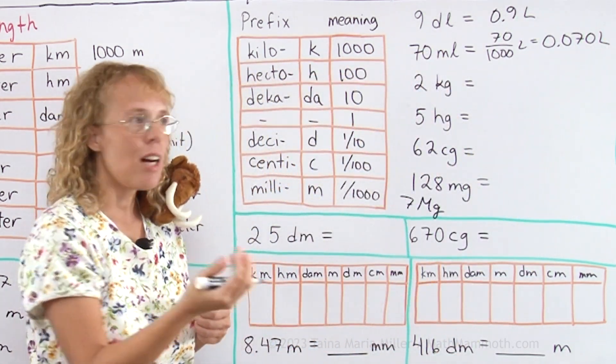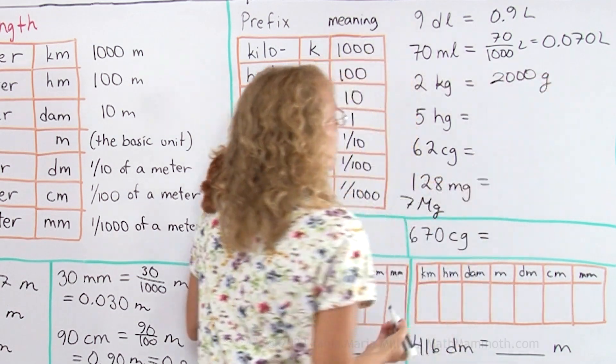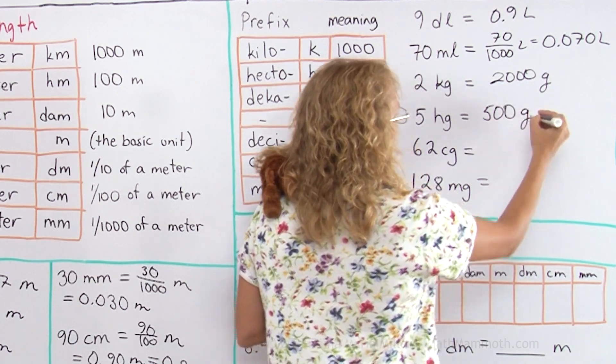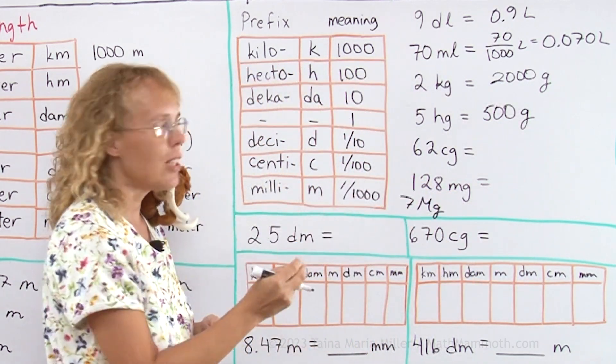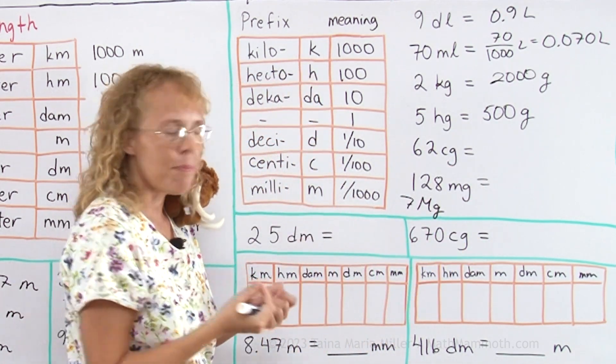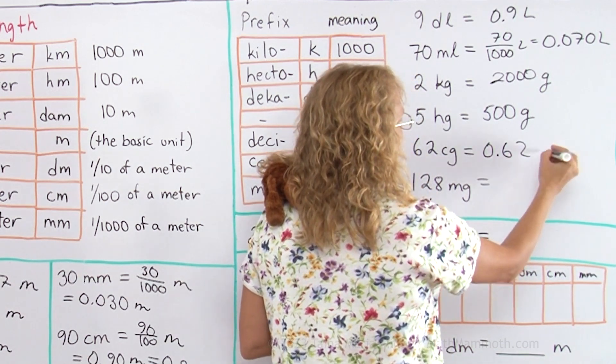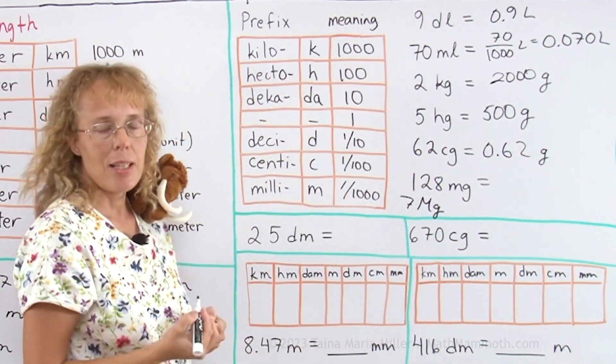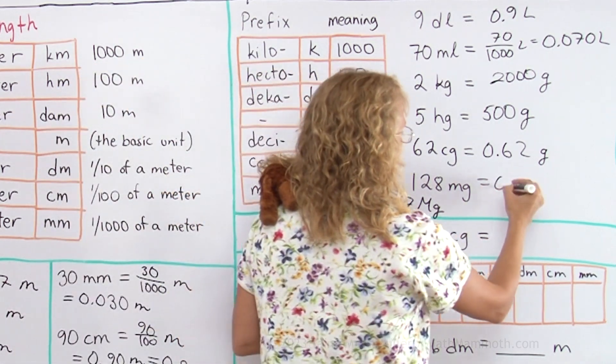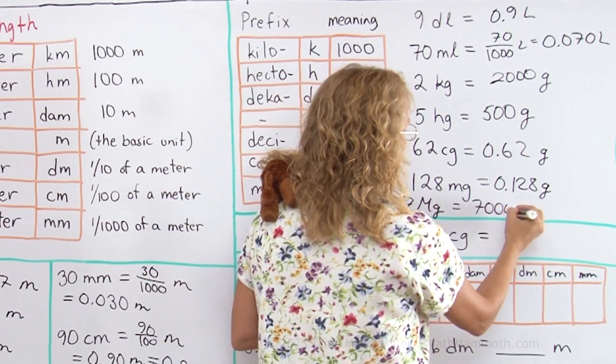Two kilograms. Kilo is thousand, so I have 2000 grams. Five hectograms. Hecto meaning hundred, so 500 grams. I'm just changing these towards the basic unit here. 62 centigrams, 62 hundredths of a gram, 0.62 grams. And then 128 milligrams, 128 thousandths of a gram, 0.128 grams. And then Mathey's weight, seven million grams.